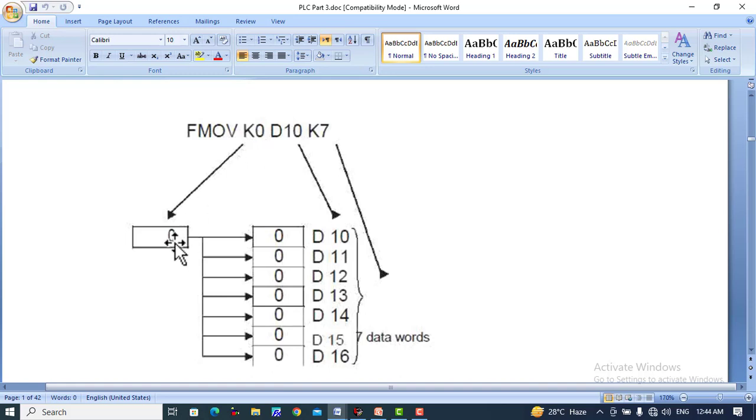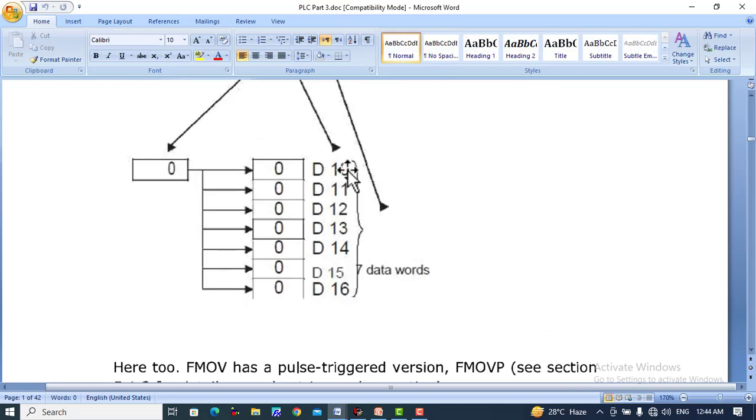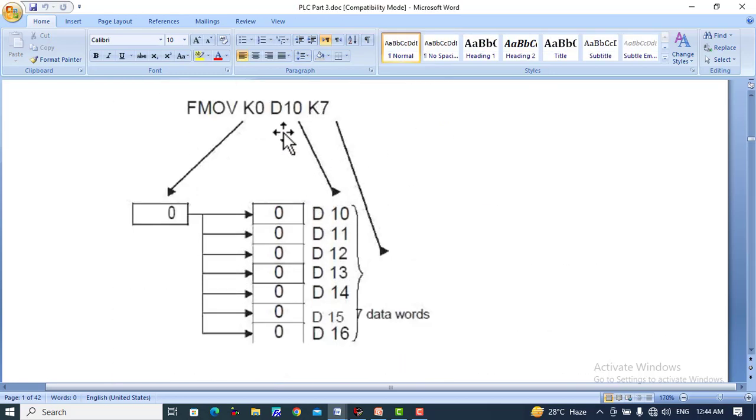If this is K1, then the one value will be transferred to this destination. If this destination is changed to 20, then it will be transferred to 20 destinations. This zero value or one value, whichever you want to transfer.